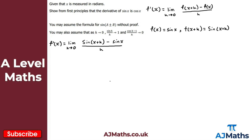Now we have sin(x + h), and we've been told we can use the formula for sin(a + b). This compound angle formula is given in the formula book so you don't need to memorize it. For sin(a + b), we get sin a cos b plus cos a sin b. In our case, replacing a and b with x and h, we get sin x cos h plus cos x sin h.